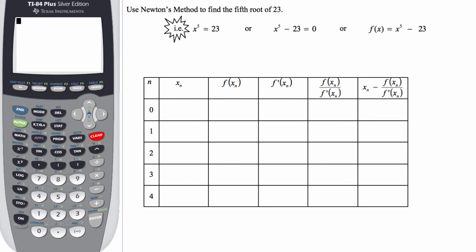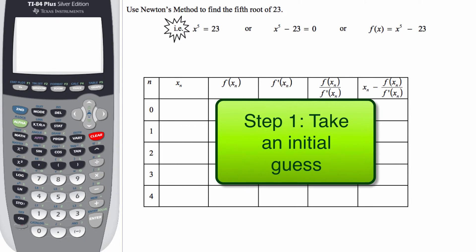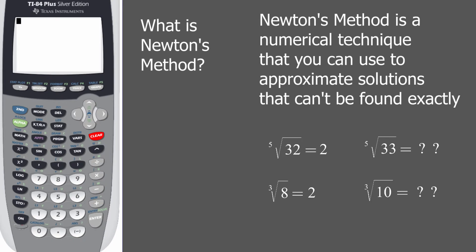Now, what we're going to do is actually, we've got to come up with an initial guess. That's always going to be our first step. And so one of the things we have to do, so I'm going to go back here for a second, just kind of work through a couple of pieces. We want the fifth root of 23.